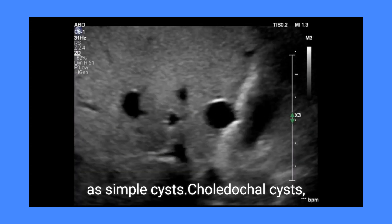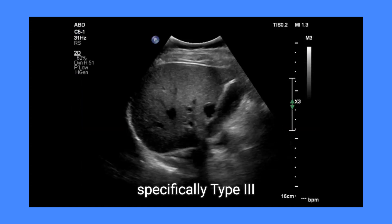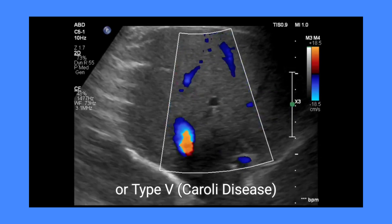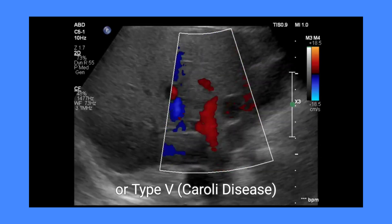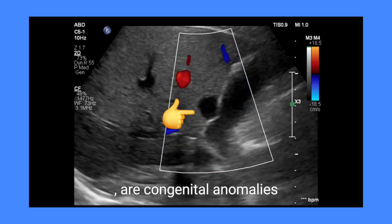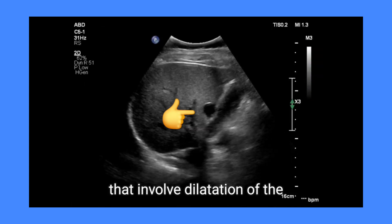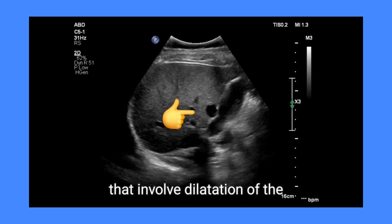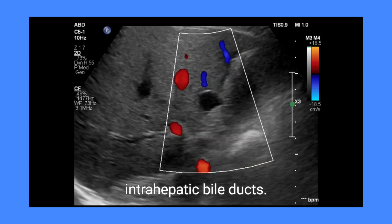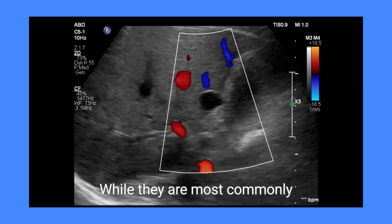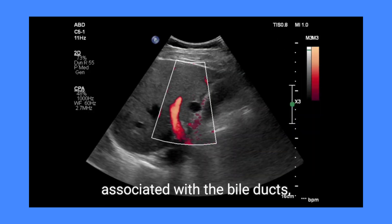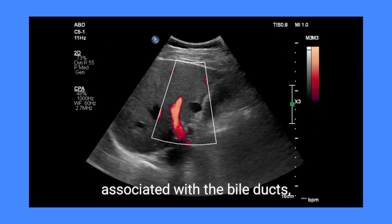Choledochal cysts, specifically type 3 or Caroli disease, are congenital anomalies that involve dilatation of the intrahepatic bile ducts. While they are most commonly associated with the bile ducts, they can also present as cystic lesions within the liver.